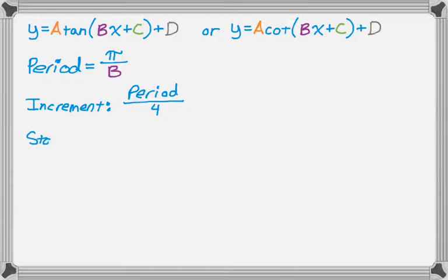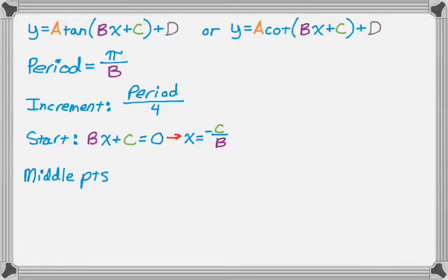The starting point is just going to be whatever's in parentheses, set equal to zero, and then solve. So we have Bx plus C equals zero, and then solving that gives us x equals the opposite of C over B. But again, you're just going to set it equal to zero and solve, so don't bother memorizing that. The middle points that we find are actually going to be located at y equals D, and that's analogous to the sinusoidal axis, so I'm going to put that in quotes. Sometimes when I talk about it, I kind of say where's the sinusoidal axis? I don't really mean that. I mean, where do we put the middle points?